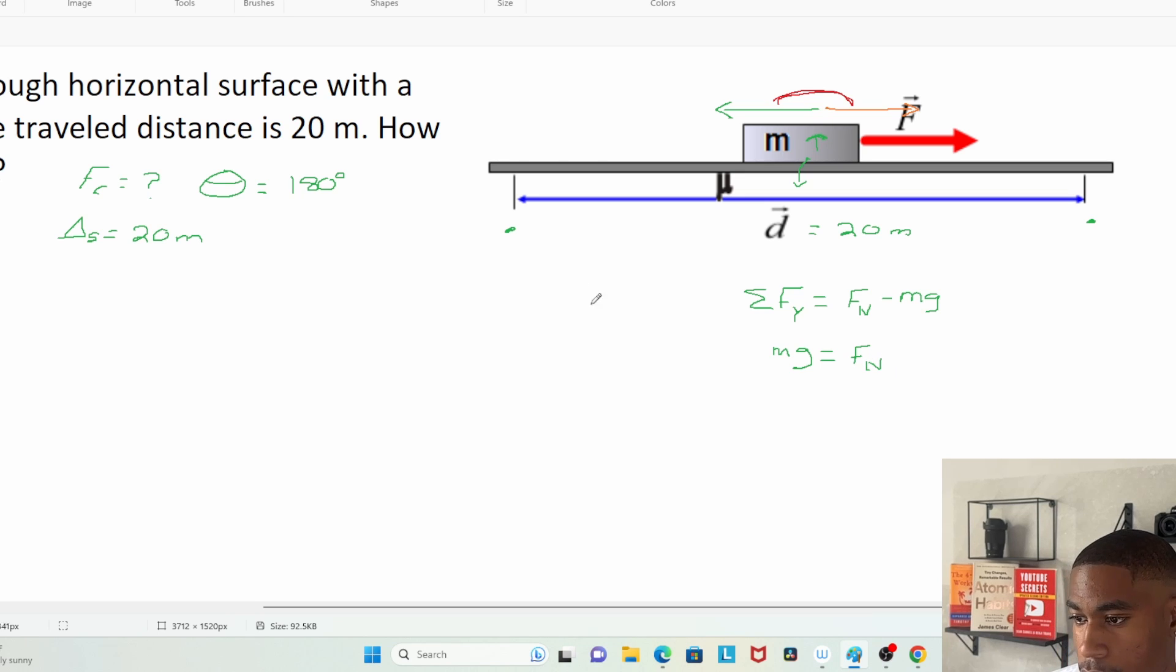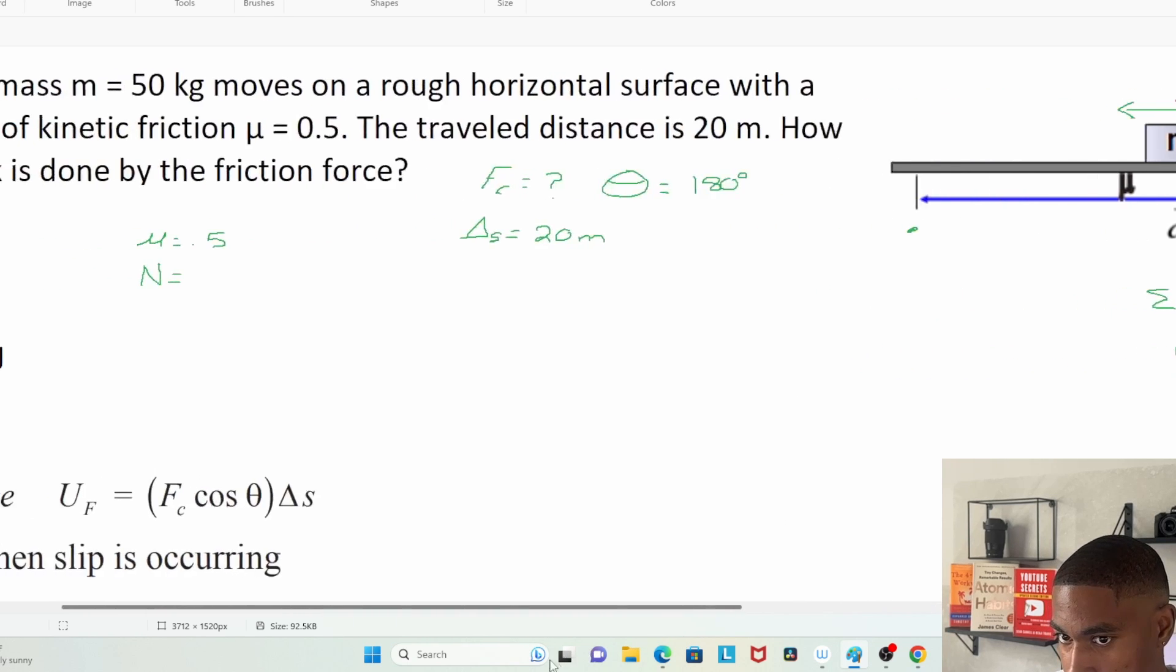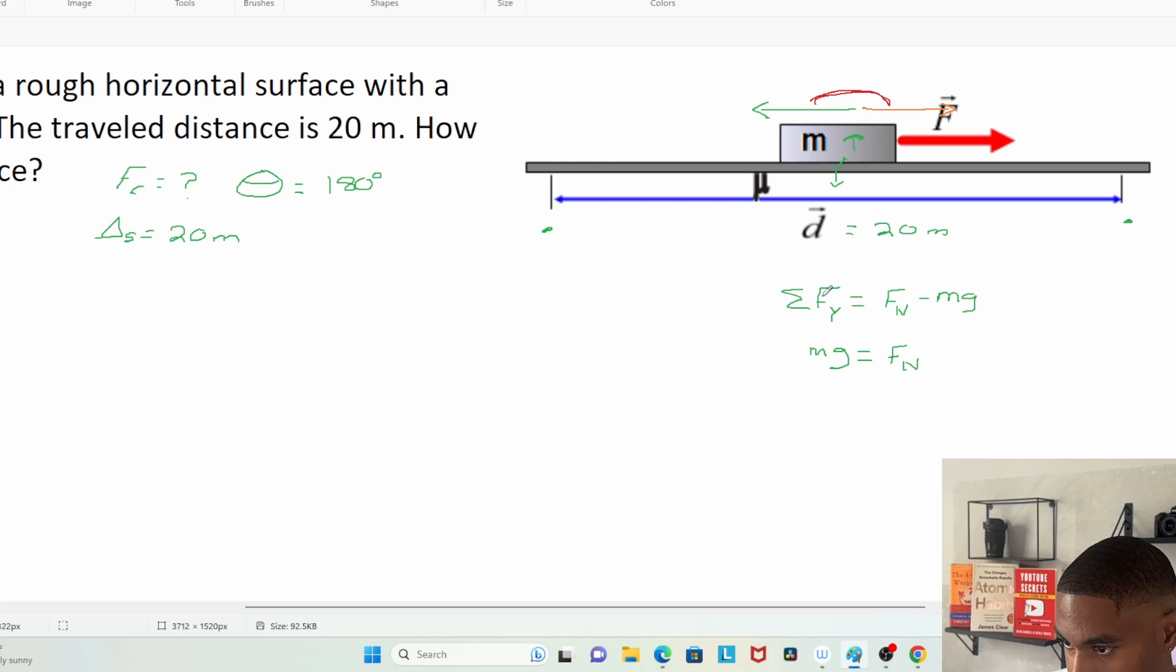What's m and what's g? The mass is going to be 50 kilograms times 9.8 meters per second squared. Pause the video if you need. I'm getting 490 and I'm getting that in newtons.